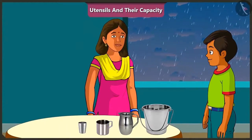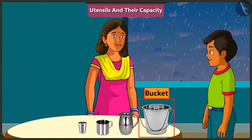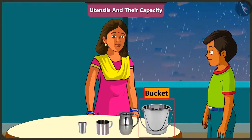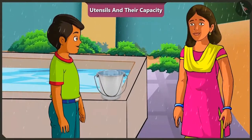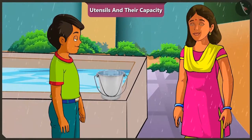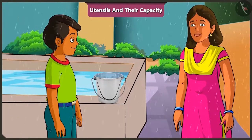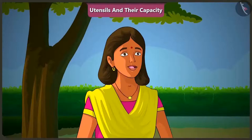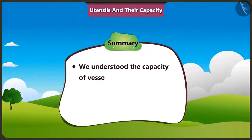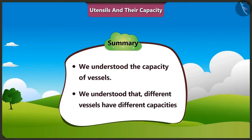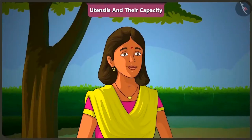Mishtu, just tell me, which vessel should we use to collect rain water? We should collect it in this bucket because the bucket has the highest capacity. And with the help of this bucket, it will be possible to fill the tank much faster. Well said. So children, today along with Mishtu, we understood the capacity of vessels and we also understood that different vessels have different capacities. In the next video, we will understand why the vessel fills up on putting objects in half filled containers.